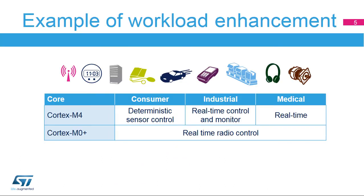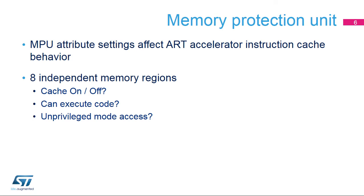Many application domains can benefit from the dual-core architecture of the STM32WB devices. The Cortex-M4 in the STM32WB microcontroller offers support for eight independent memory regions with independent configurable attributes for access permission, read-write allowed or not in privileged-unprivileged mode, execution permission, executable region or region prohibited for instruction fetch, and cache policies that affect ART accelerator instruction cache behavior.